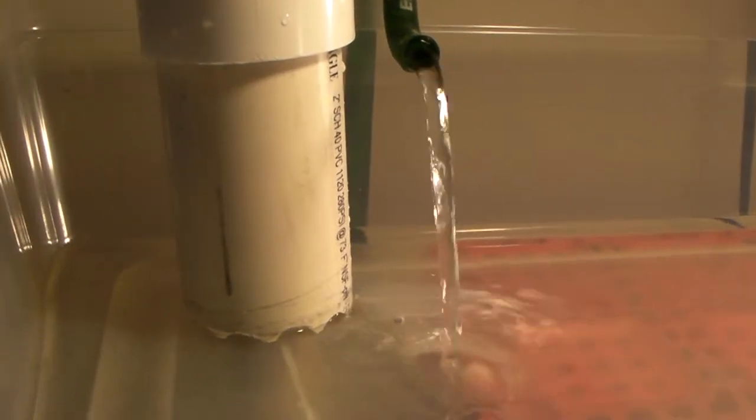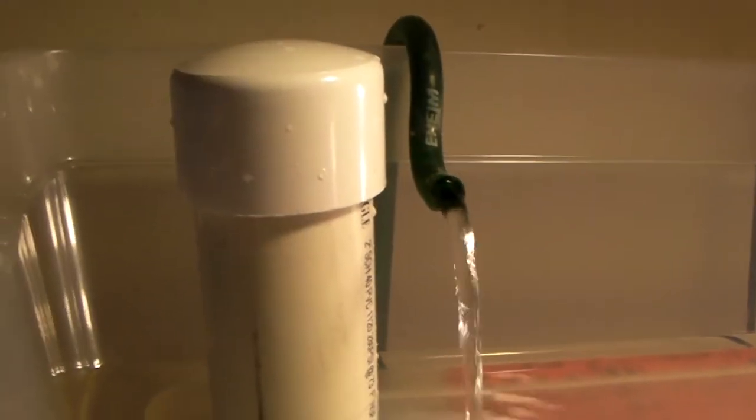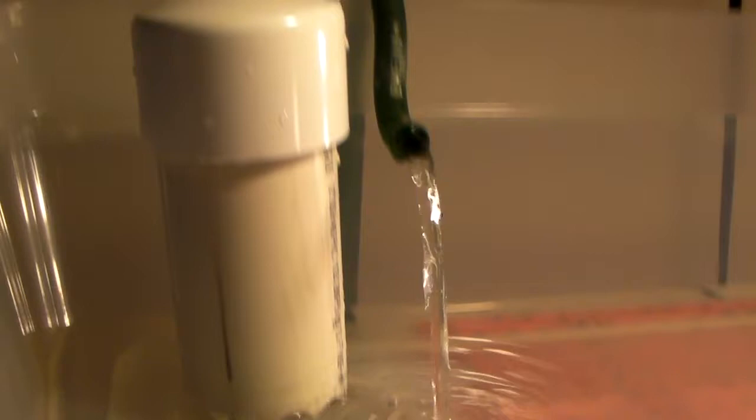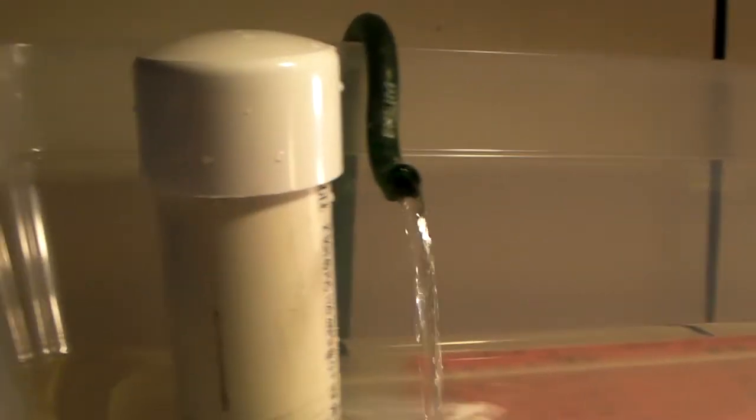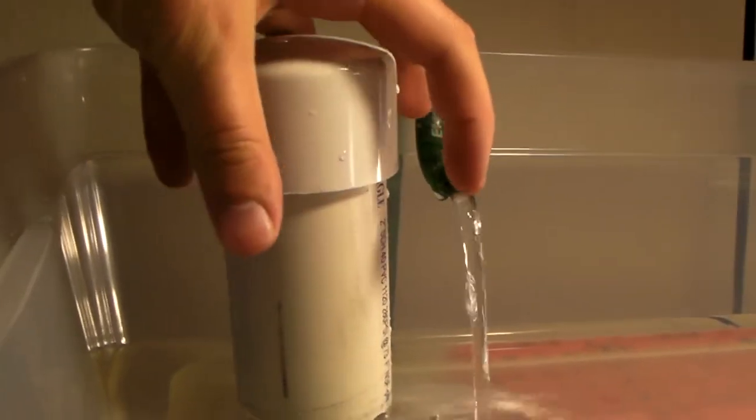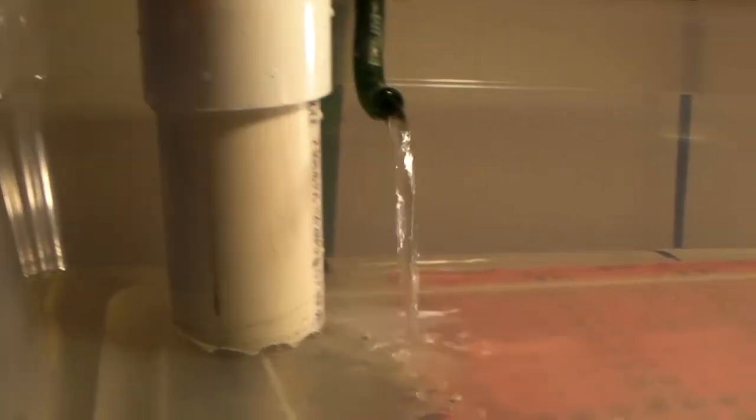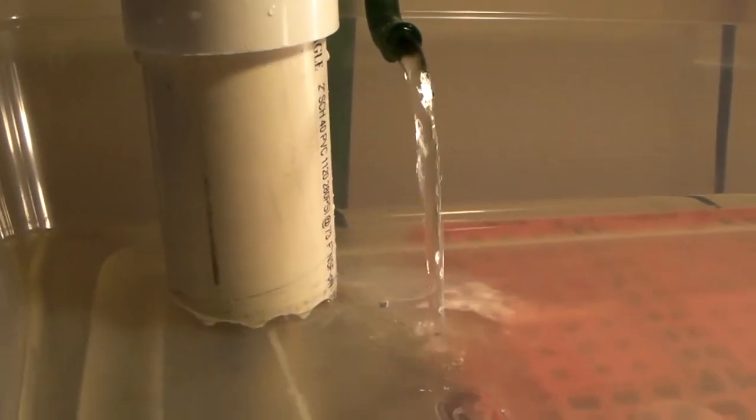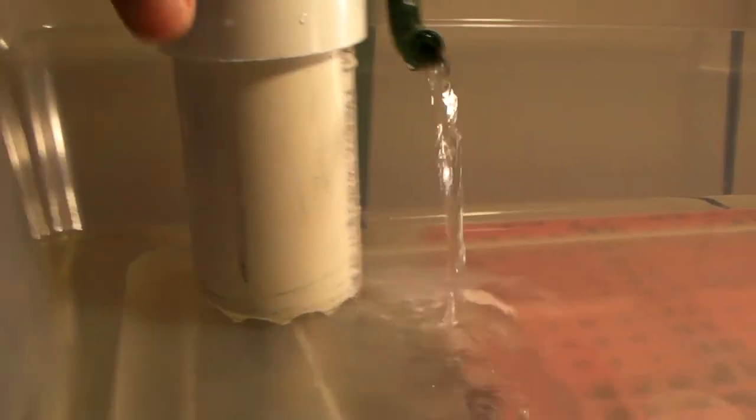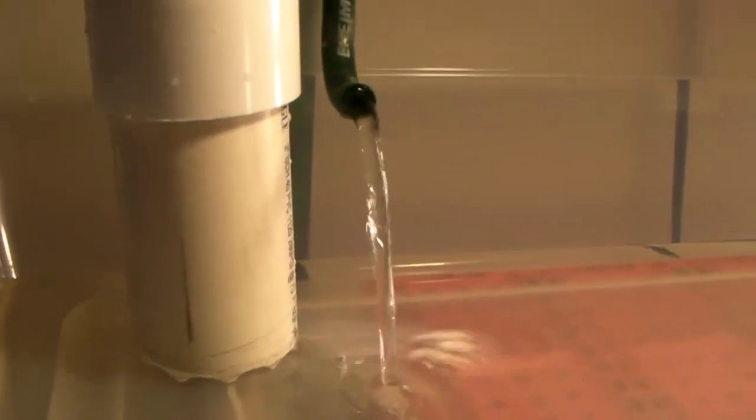And that's how a bell siphon works, which is this style of siphon. I still want to put an overflow here so it can overflow, and I still have to build a trap around this so that way when I fill it full of gravel, the gravel doesn't plug up those holes and I can pull this out for maintenance and stuff like that.